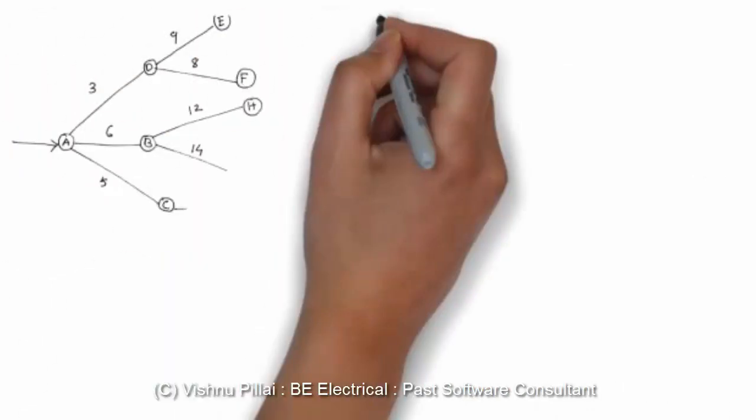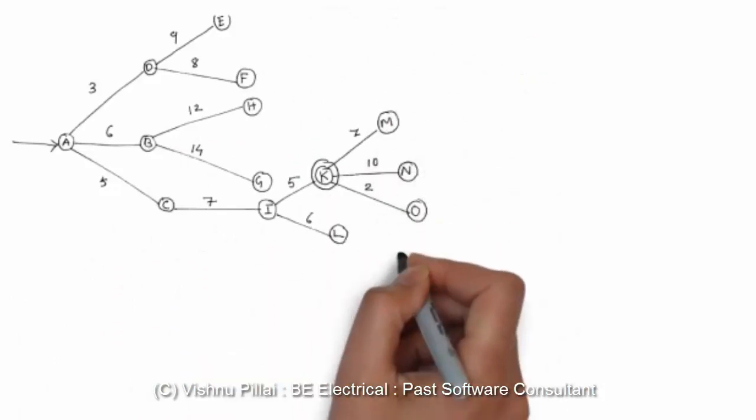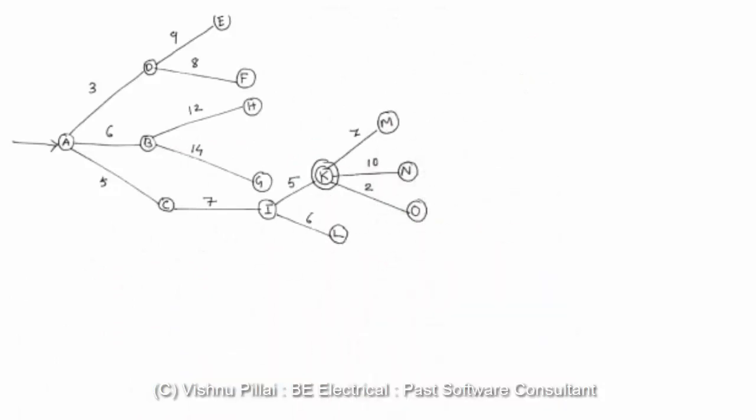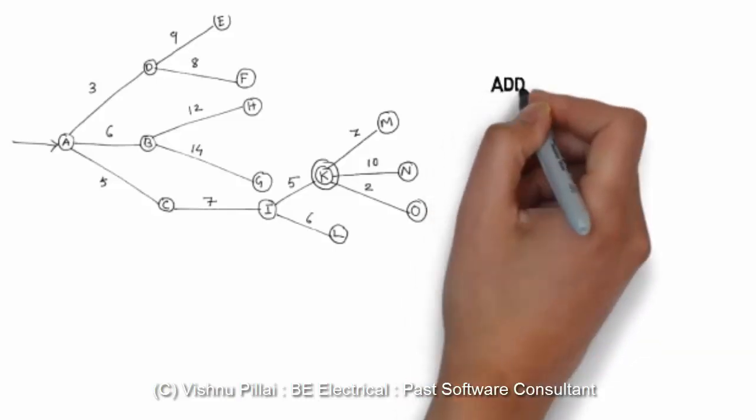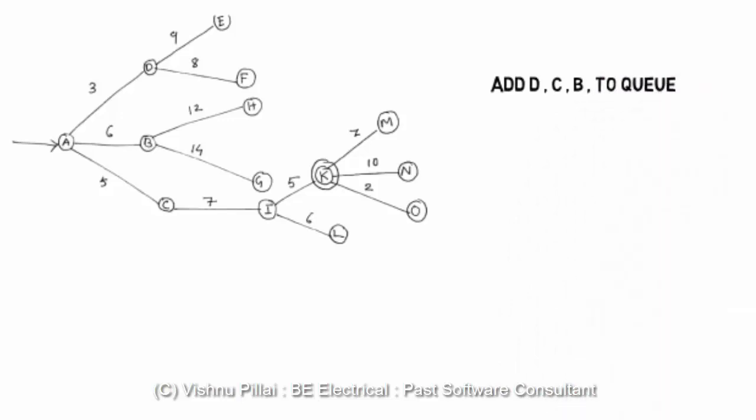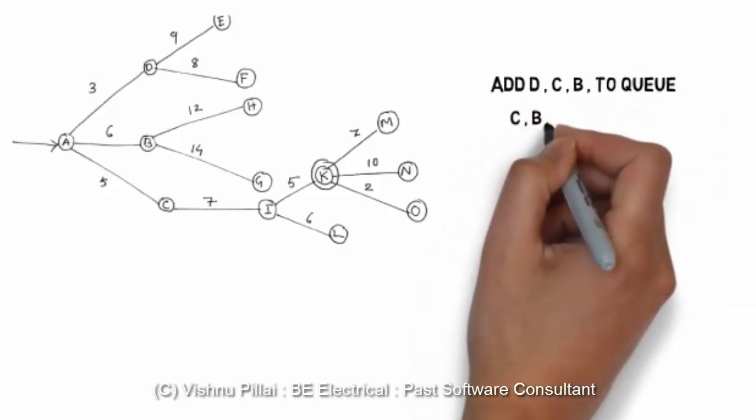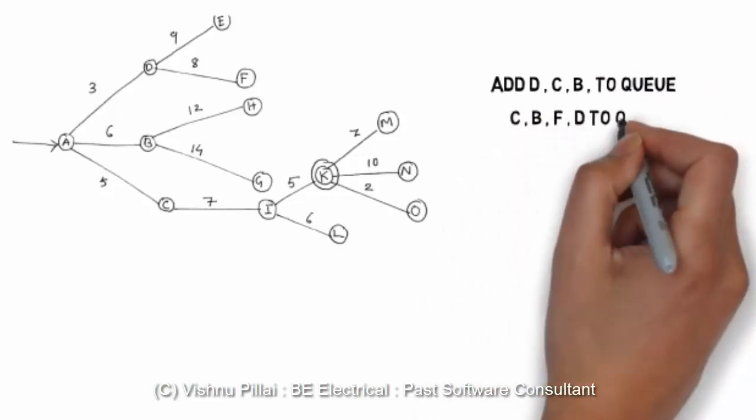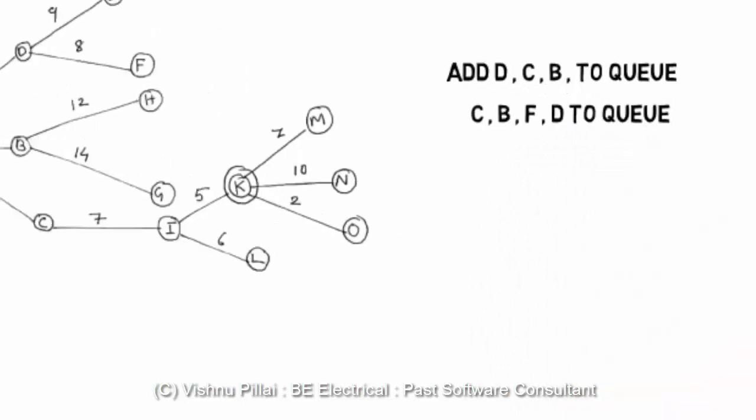If you look at a simple graph then there are A, B, C, D, E, F, H, G, I and K is the goal which we want to achieve and M, N and O are the other nodes. We have a cost function. The numbers here are the cost function associated with each node path.